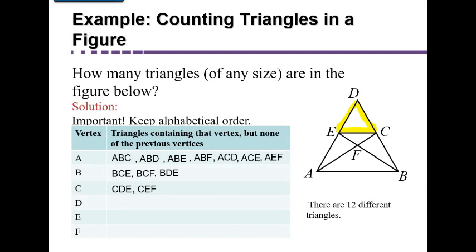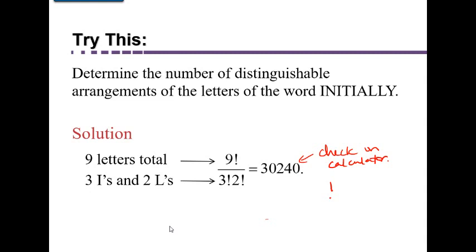E and F can't be used as starting points because there aren't three letters left after them. So we have 12 different triangles and we've identified all of them. That's another version of systematic listing that you might find helpful when doing your homework. Thank you for watching — if the video was helpful, please give it a thumbs up, as that helps other students find the video.